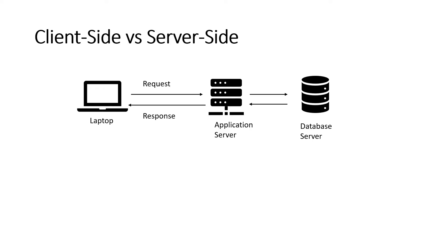This concept is important because in the next videos on customization — like UI policies, UI actions, and business rules — you need to understand it. For example, UI policies work on the client side, while business rules mostly work on the server side. Client side means where you send the request; server side is the application server and database server that give you the response. If you want more about servers, I have a detailed video in my Windows Server 2016 playlist.